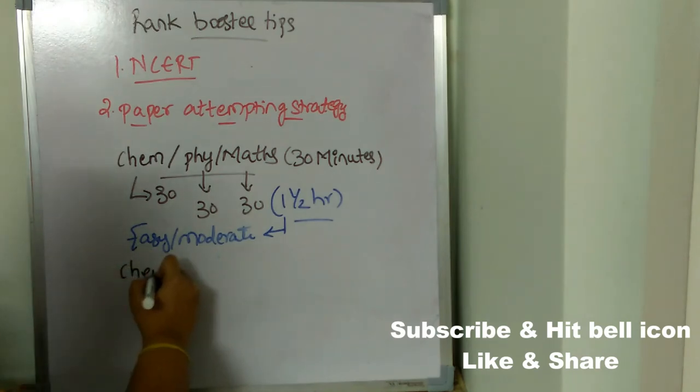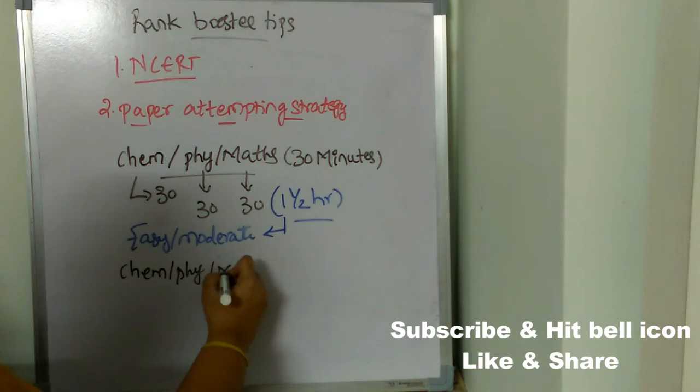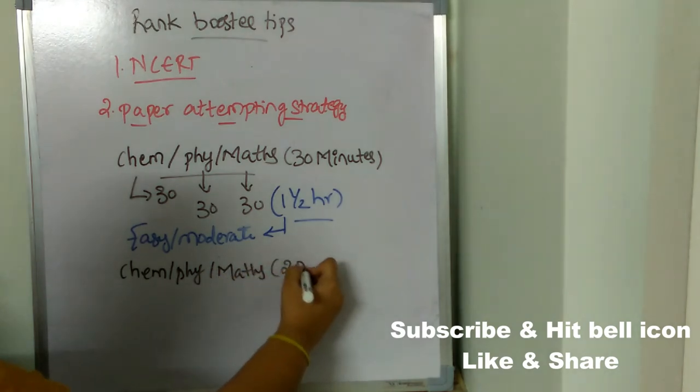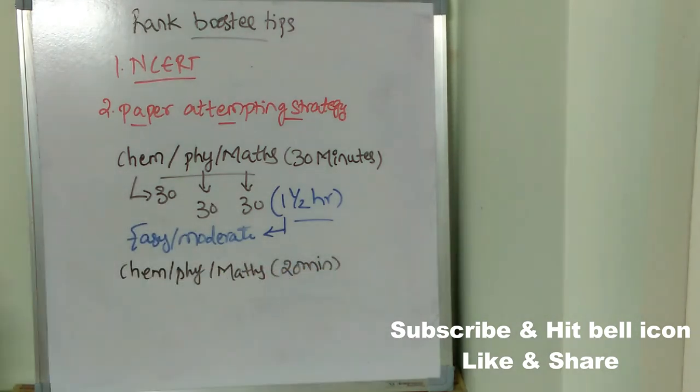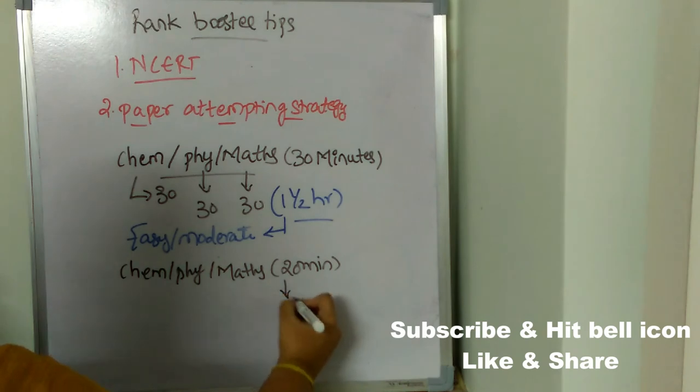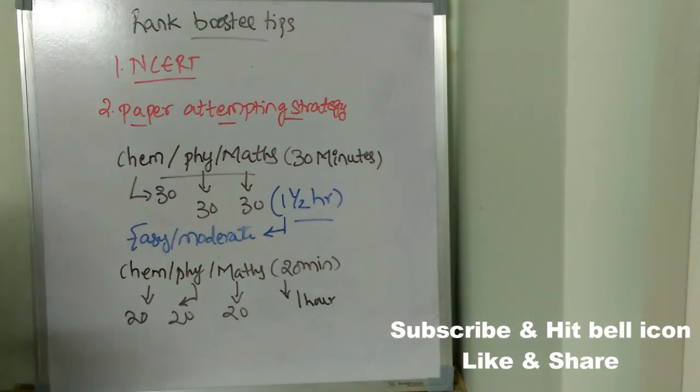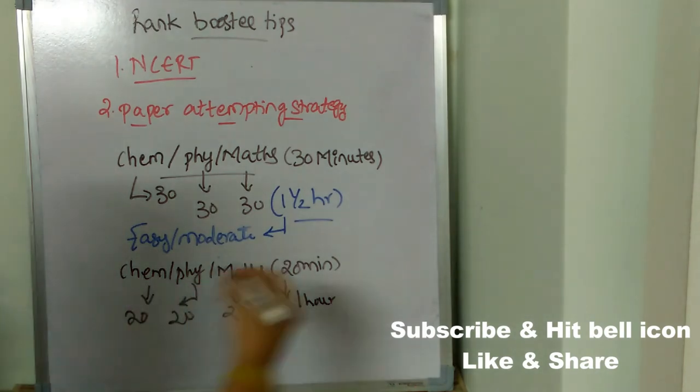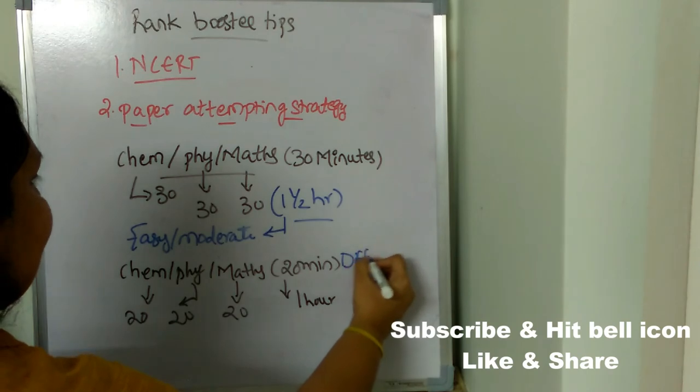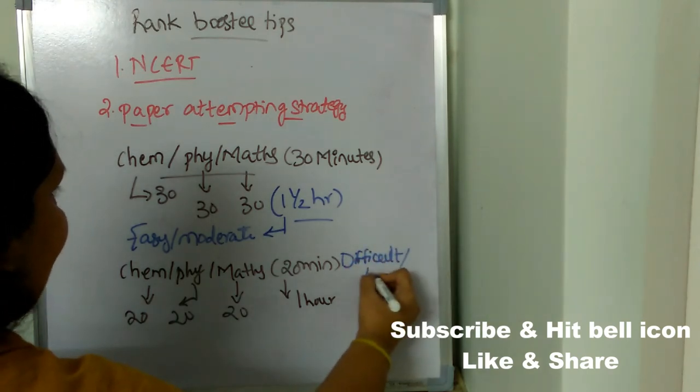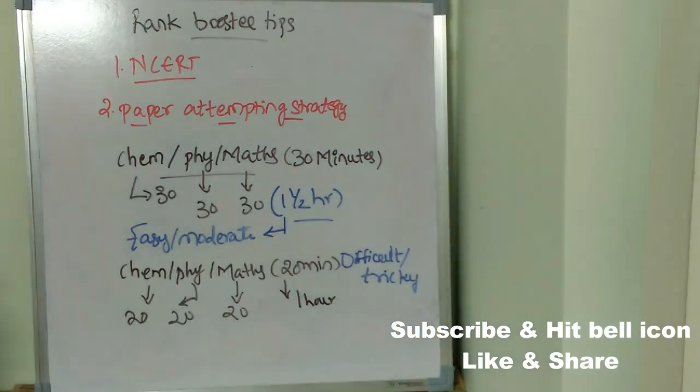In the second round, solve chemistry, physics, and mathematics again, but this time you will give 20 minutes each, totally one hour - 20 minutes for chemistry, 20 minutes for physics, and 20 minutes for mathematics. At this time you need to solve difficult questions and tricky questions.